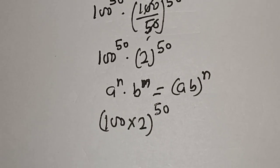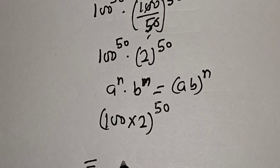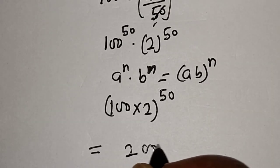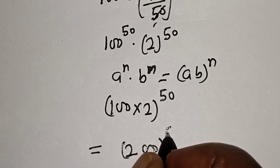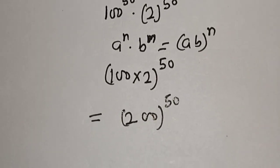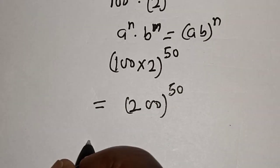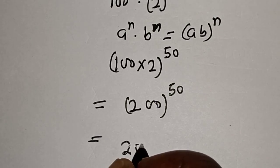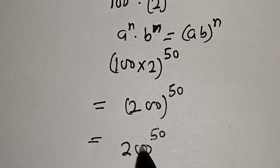So, 100 times 2 is equal to 200 to the power of 50. Our final answer is 200 raised to power of 50.